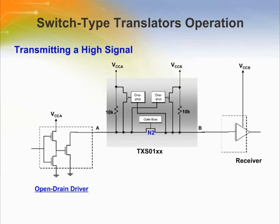Here we show the device operation of transmitting a high signal. When the open drain driver connected to the A port is high, it turns off on the VCCA side. As it turns off on the VCCA side, the gate bias turns off also, and it pulls VCCB to the internal pull-up resistor to allow the VCCB side to also receive a high.